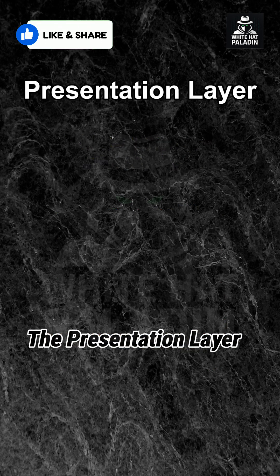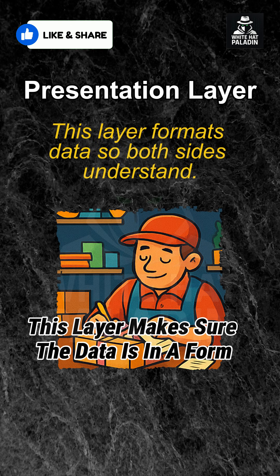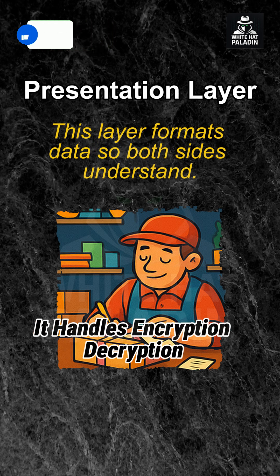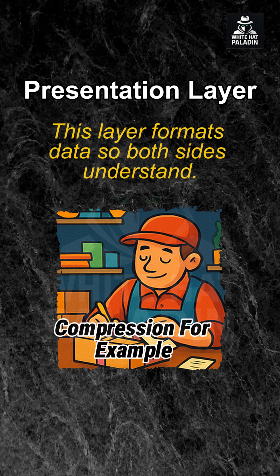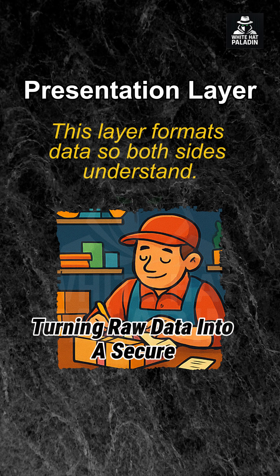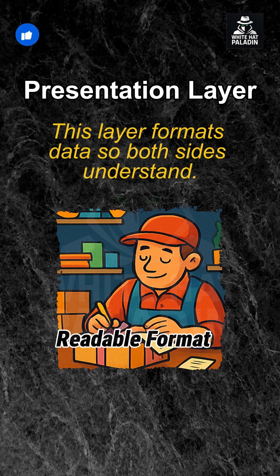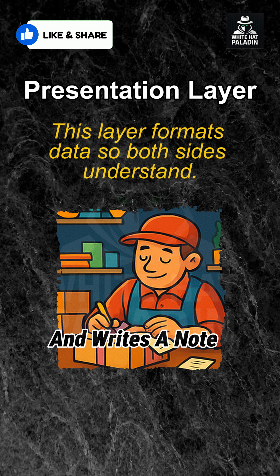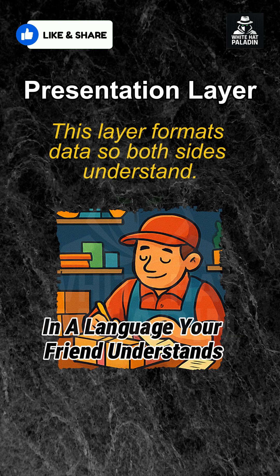Next, the presentation layer. This layer makes sure the data is in a form both sides can understand. It handles encryption, decryption, and compression — for example, turning raw data into a secure, readable format. That's when the shopkeeper wraps your items carefully and writes a note in a language your friend understands.